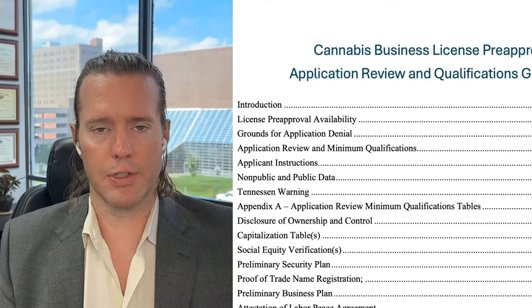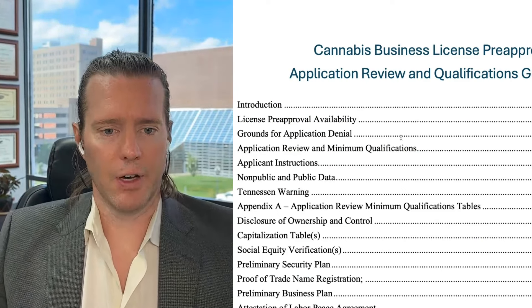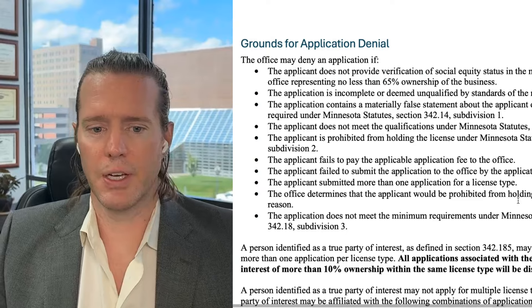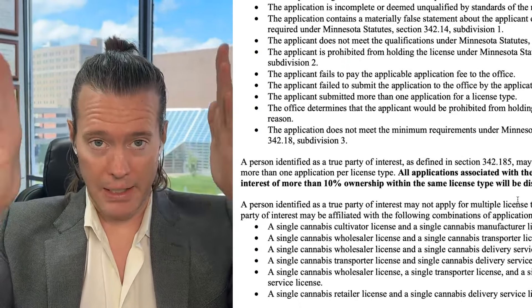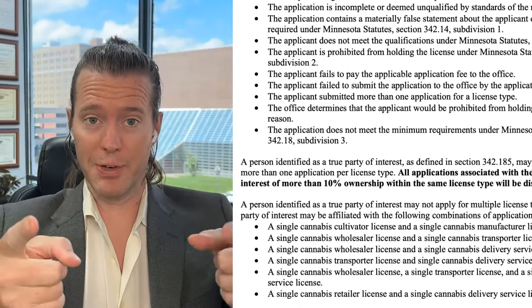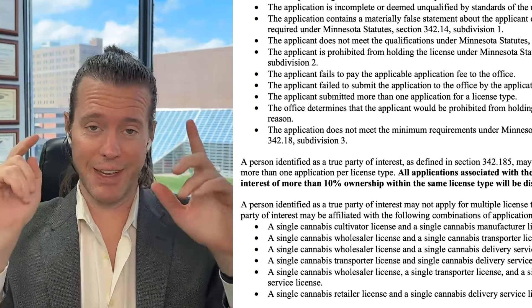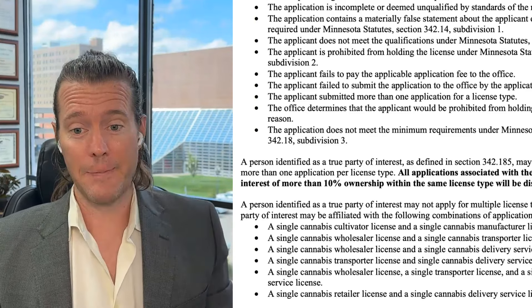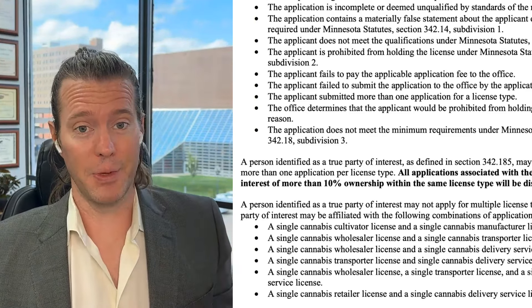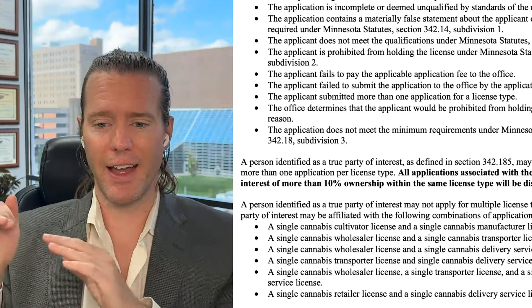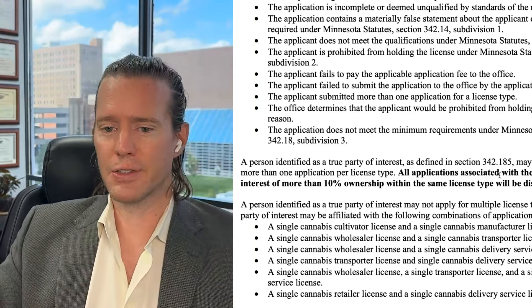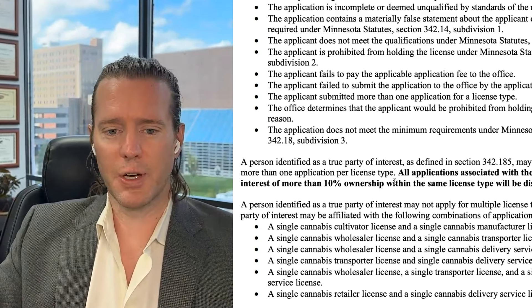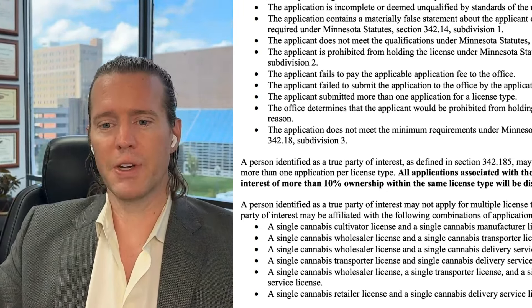They have grounds for denial right there on page three, and here's where they begin telegraphing things for wealthy people. All applicants associated with the same True Party of Interest of more than 10% ownership within the same license type will be disqualified. That sounds protective, but provided you create a two-member LLC where the rich person has 9% and the social equity applicant has 91%, you're under the threshold.